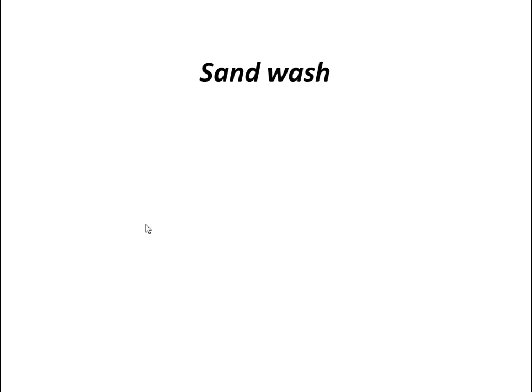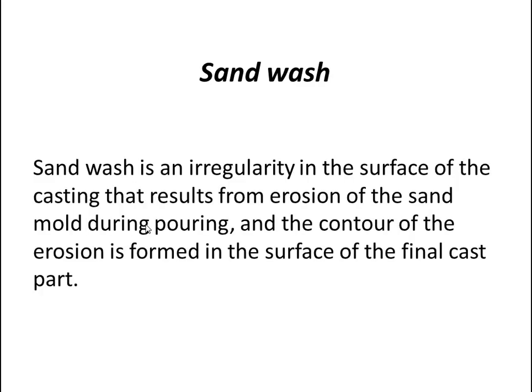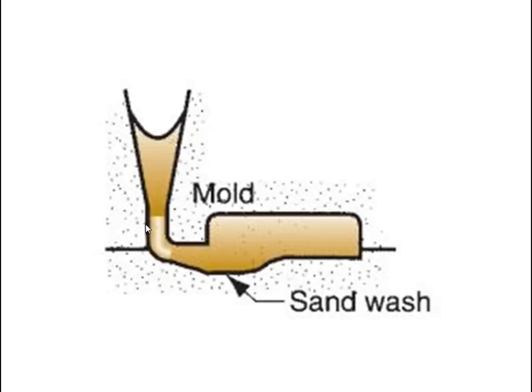The third defect is sand wash. Sand wash is an irregularity in the surface of a casting that results from erosion of the sand mold during pouring. The contour of the erosion is formed in the surface of the final cast part. There is a figure of sand wash.